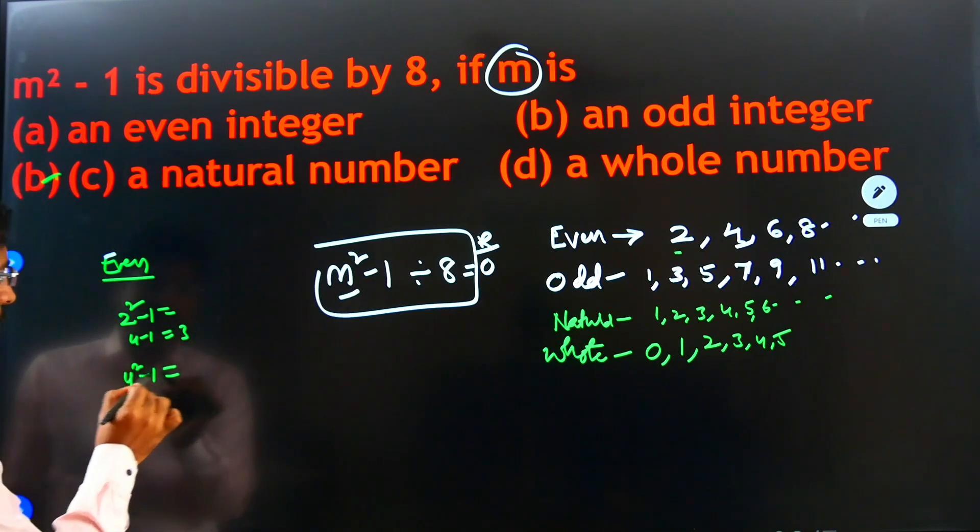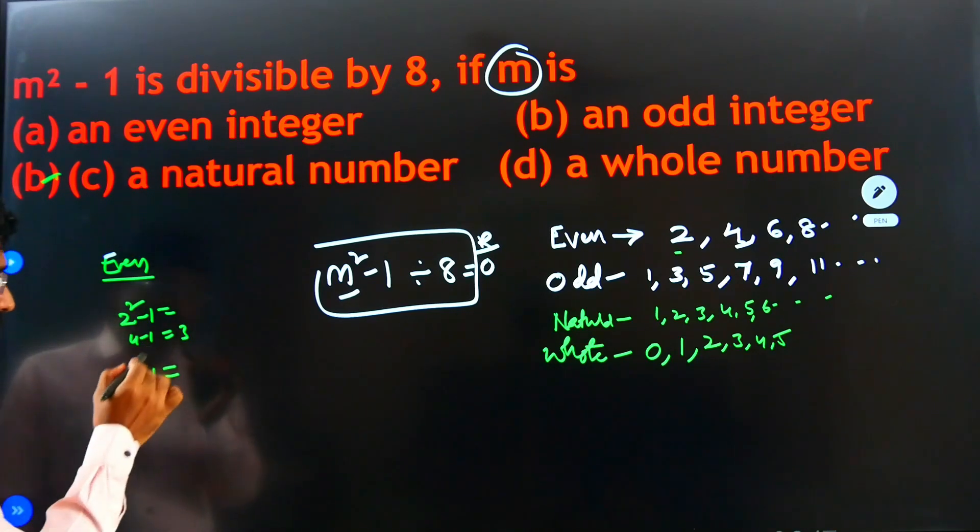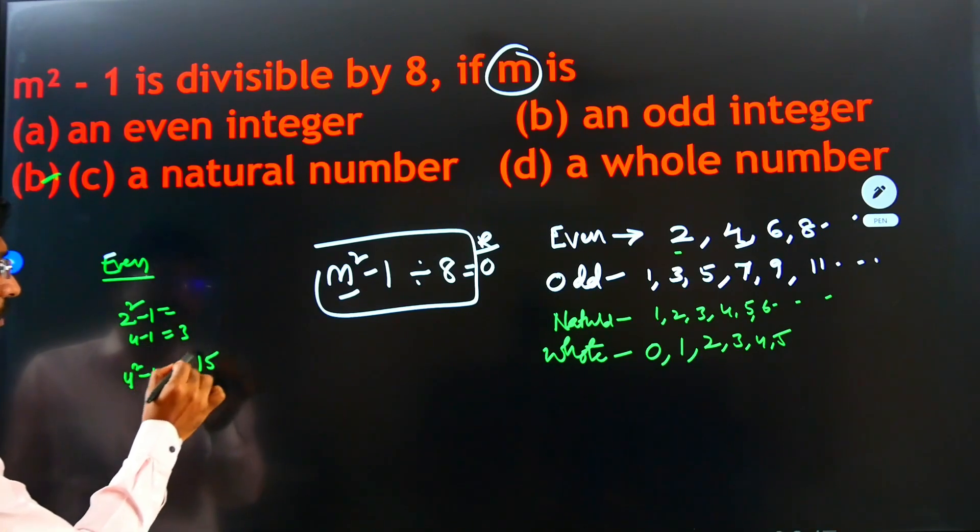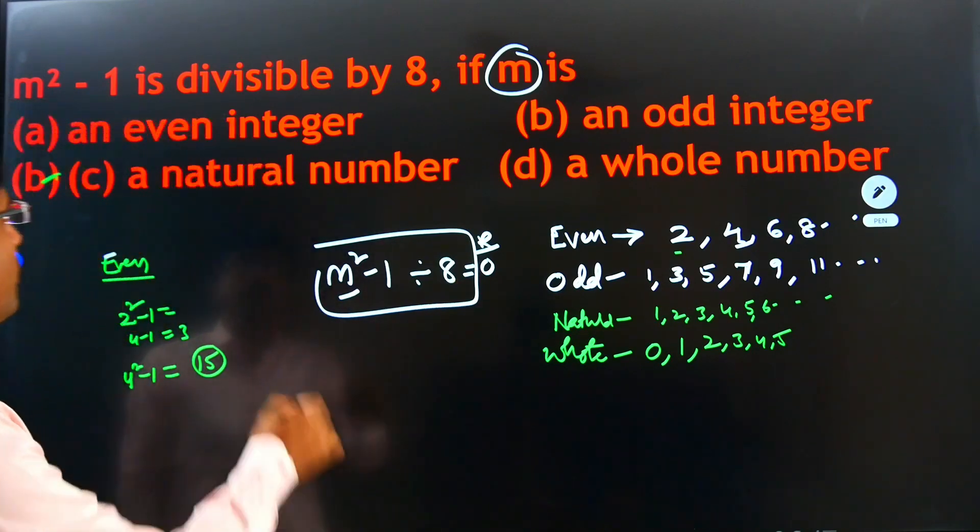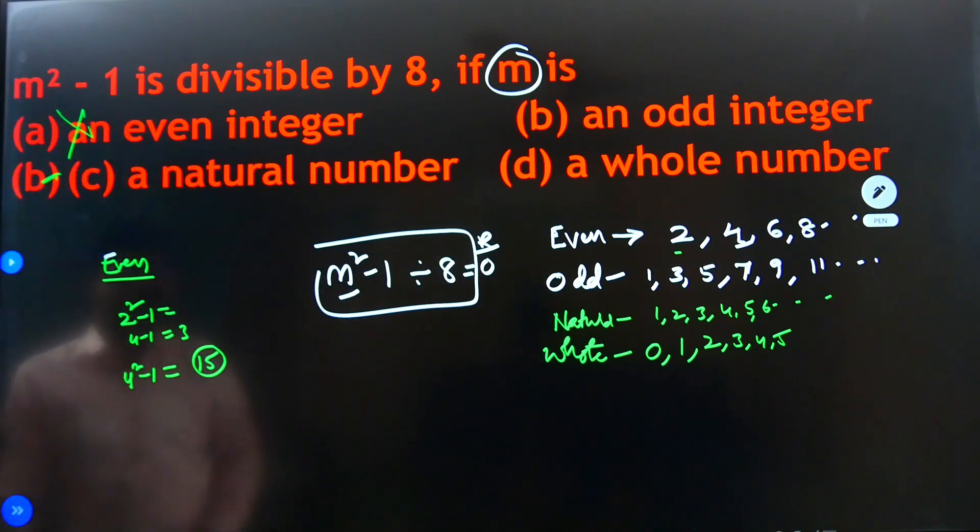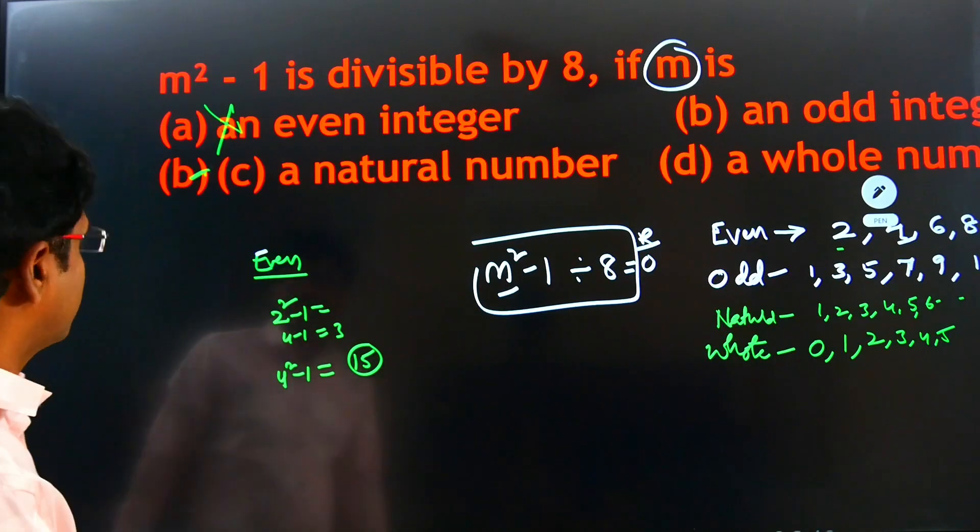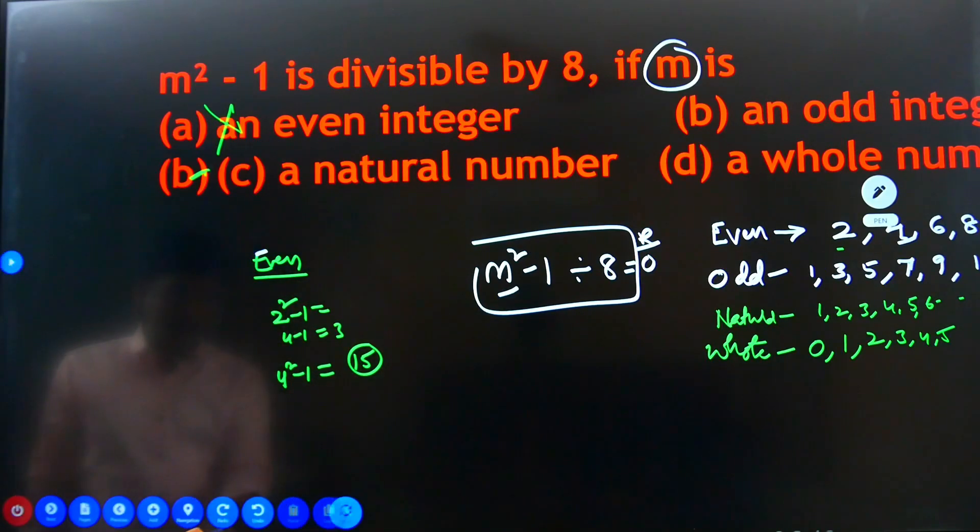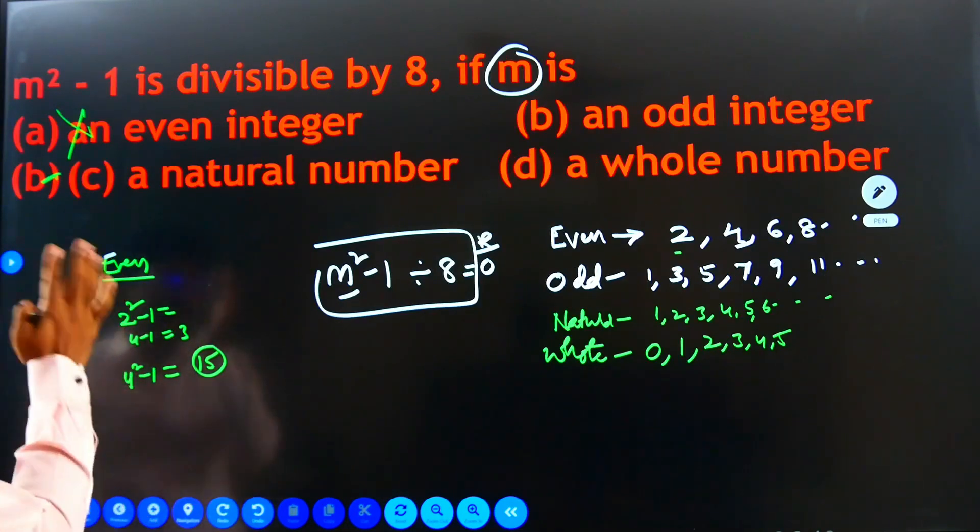I will take one more example. 4, 4 square minus 1. 4 means M. 4 square minus 1. 4 square means 16. 16 minus 1, 15. 15 not divisible by 8. So, even number is not possible. Option A is not correct.